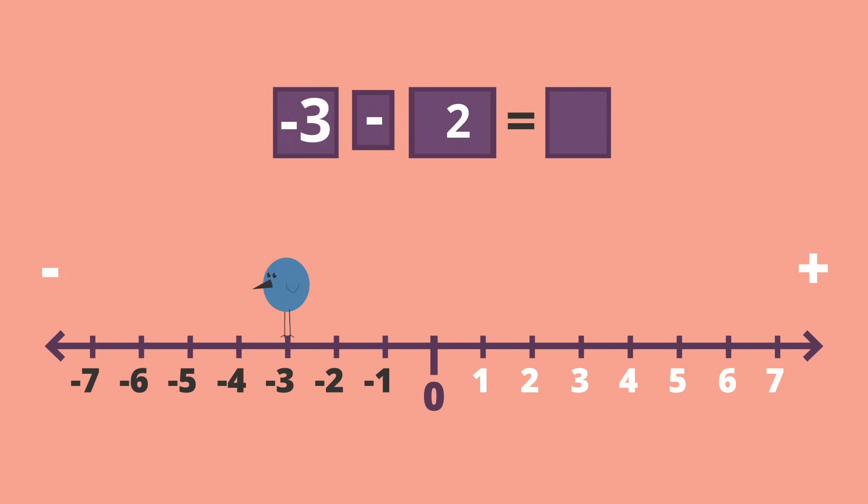The second number tells you how far to move and in which direction. Positive, forward, or negative, backwards. Where you land is your answer.